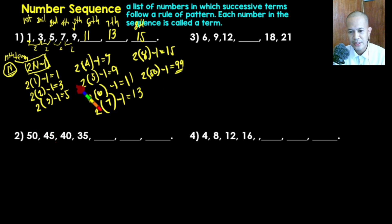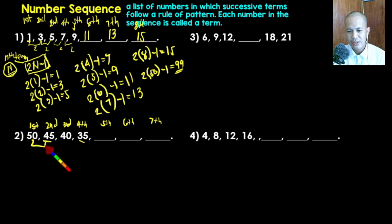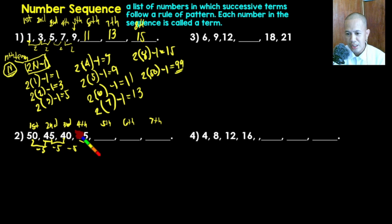Let's have the next example. The sequence is 50, 45, 40, 35. So 50 is your first term, 45 is your second term, 40 is your third term, and 35 is your fourth term. We're looking for the fifth, sixth, and seventh terms. Observing the pattern: 50 minus five gives 45, 45 minus five gives 40, 40 minus five gives 35 — we are subtracting five each time. We're going to make a formula using the trial and error method.